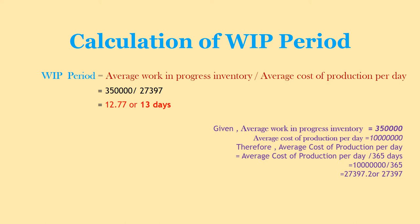Next, we need to calculate the work-in-progress conversion period. For that, the formula is average work-in-progress inventory divided by average cost of production per day. Average cost of production per day equals Rs. 1 crore divided by 365 days, which gives Rs. 27,397 per day. So work-in-progress conversion period equals Rs. 3,50,000 divided by Rs. 27,397, which is approximately 13 days.